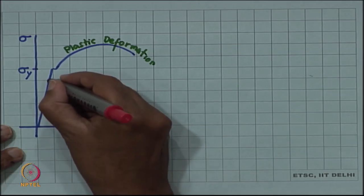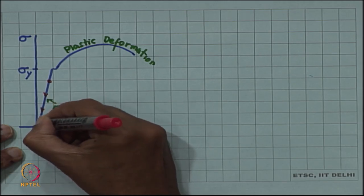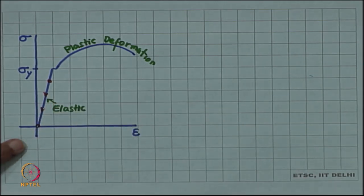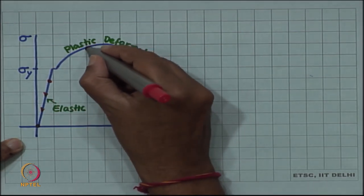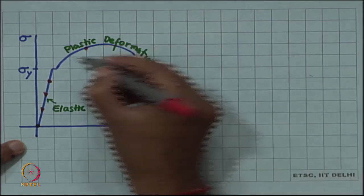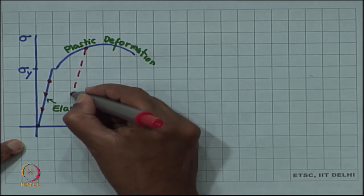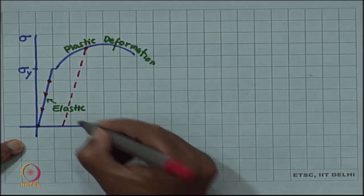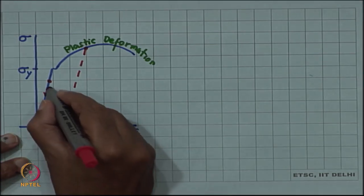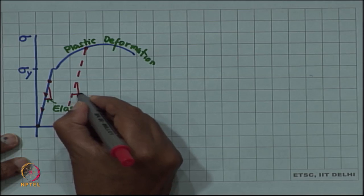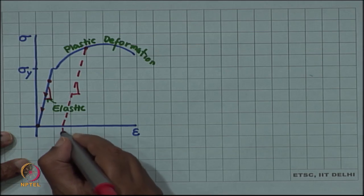If we start unloading at any point in the elastic part of the curve, then there will be no permanent deformation. But if we, after we have deformed, let's say up to a certain point in the non-linear regime and from there if we unload, then it will follow a line parallel to the initial part of the curve. The slope is not changed, which means even at zero stress, so much of strain is left.